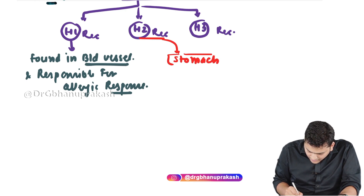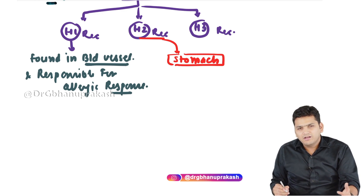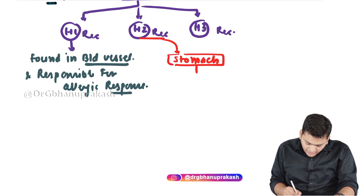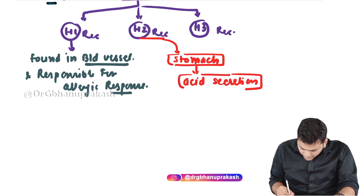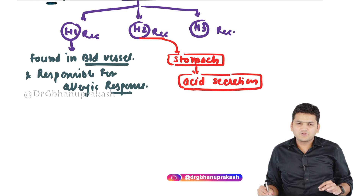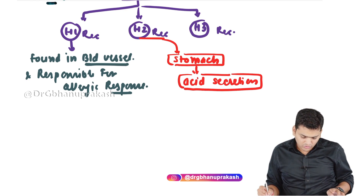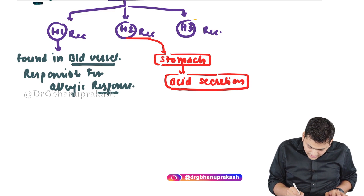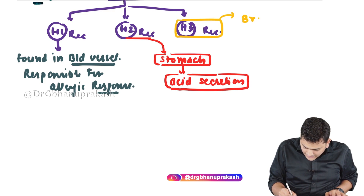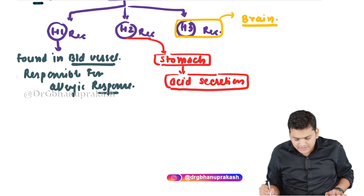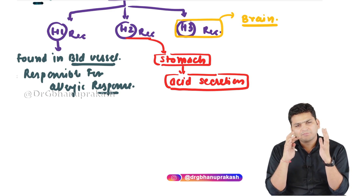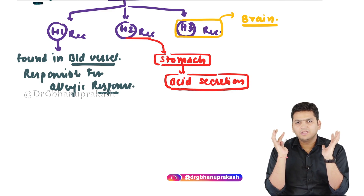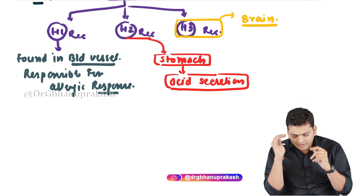H2 receptors are found in the stomach and are involved in acid secretion — the HCl secreted is regulated by H2 receptors. When histamine attaches to H2 receptors, more acid comes into the stomach. H3 receptors are found in the brain, and their function is non-specific; histamine attaches and performs various non-specific functions in the brain.